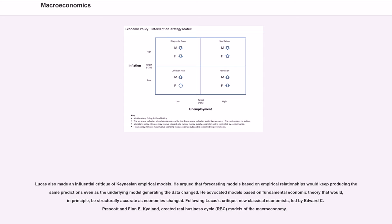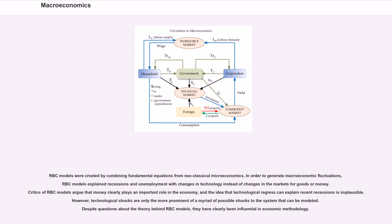Following Lucas's critique, new classical economists, led by Edward C. Prescott and Finn Kydland, created Real Business Cycle (RBC) models of the macroeconomy. RBC models were created by combining fundamental equations from neoclassical microeconomics. In order to generate macroeconomic fluctuations, RBC models explained recessions and unemployment with changes in technology instead of changes in the markets for goods or money.